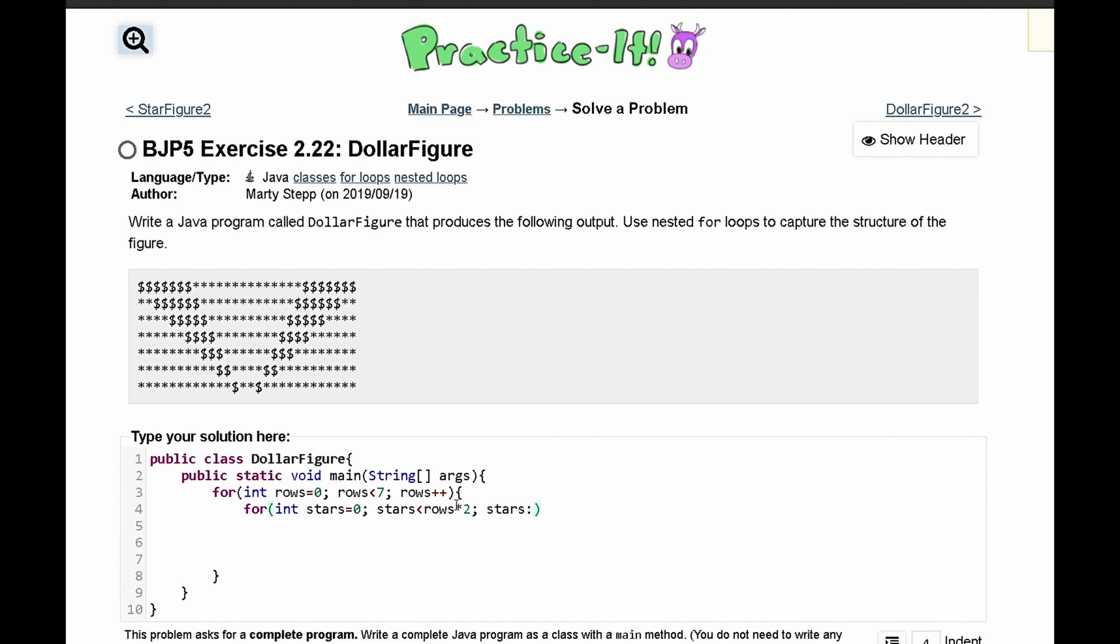For the next time we have one, we have our rows equaling to one, we multiply that two, that gives us two, and our stars will output two times, and same thing for the rest.